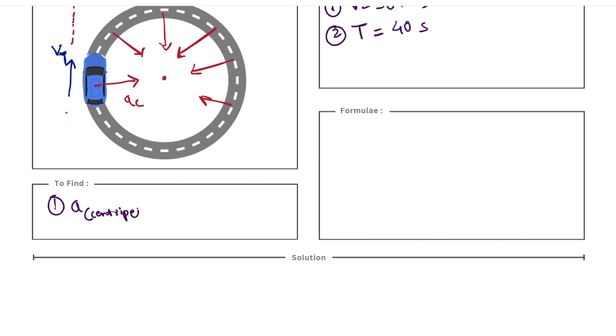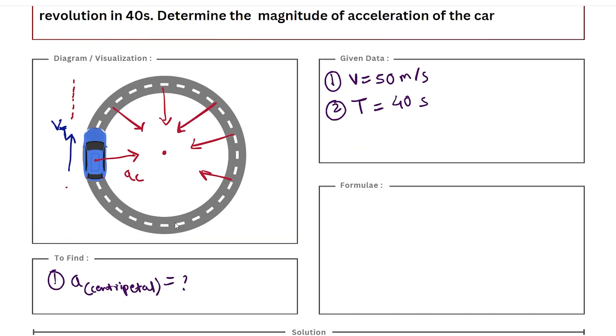So let's quickly solve this. We have to find centripetal acceleration using the values of tangential velocity and time period. So let us write the formulas. The first formula that can give us acceleration is a = v² / r.